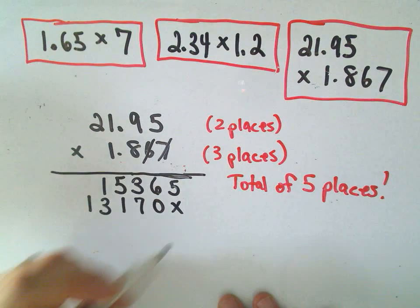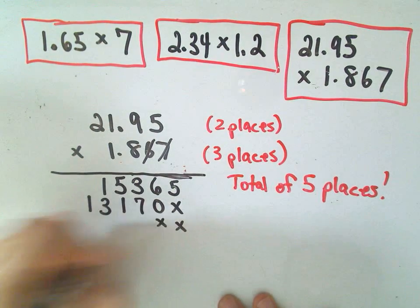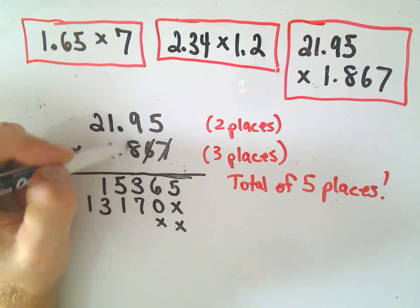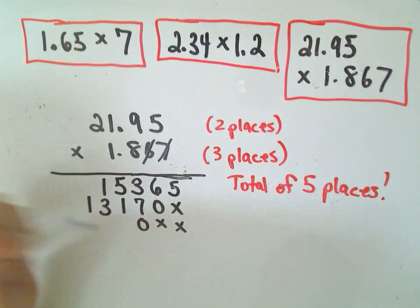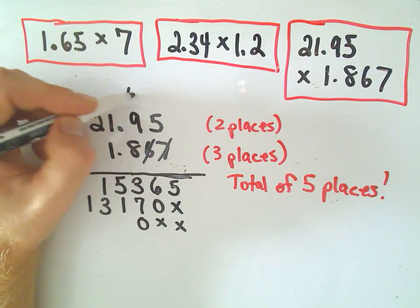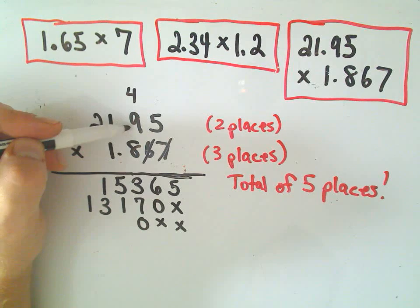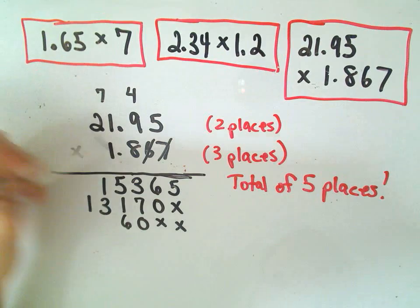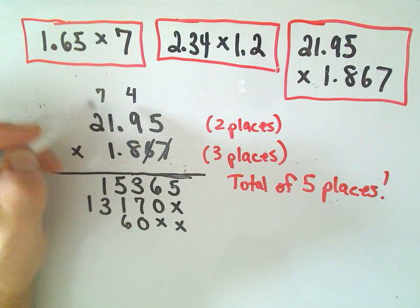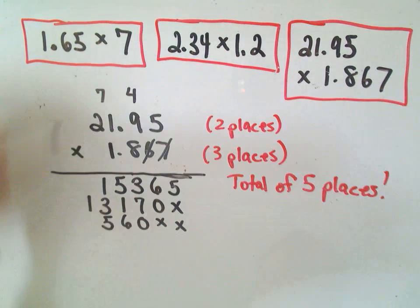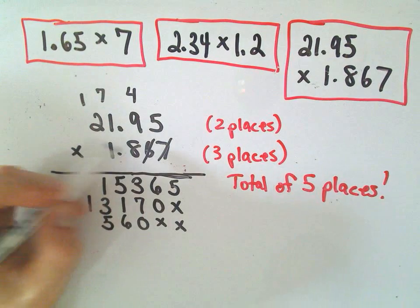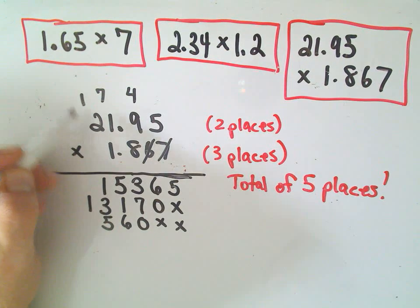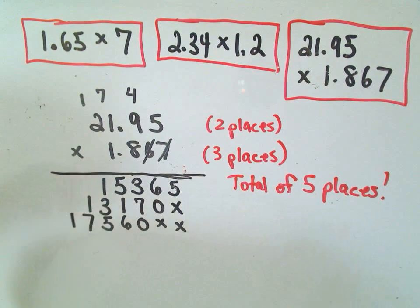Okay, so now I've taken care of the 6. I have to put 2 placeholders. So 8 times 5 is 40, so we'll drop down the 0, we'll carry the 4. 8 times 9 is 72, plus 4 is 76, we'll carry the 7. 8 times 1 is 8, plus 7 is 15, again, we'll carry the 1. 8 times 2 is 16, 16 plus 1 is 17.